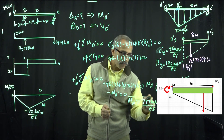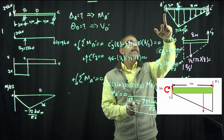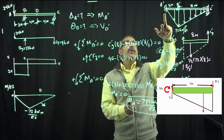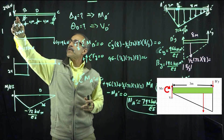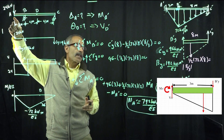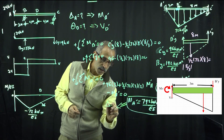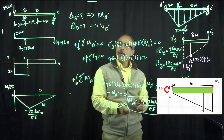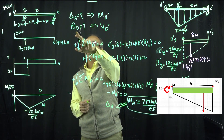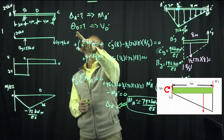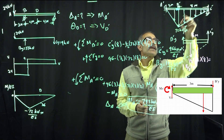We just calculated the moment at this fixed end, and we said that in the real beam that is equal to the deflection at this end. So MA prime equals delta A — that's our answer. Now the next thing we want to find is the slope at point D, which is the shear at D prime.